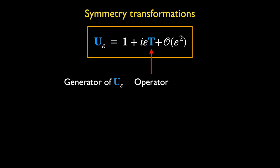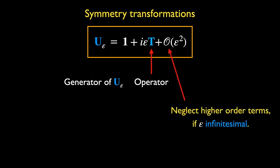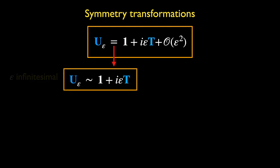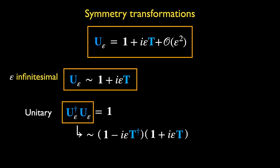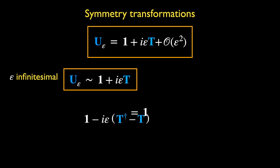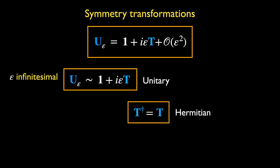The remaining terms in this series are higher orders in epsilon, and we can neglect these when epsilon is infinitesimal. This is known as an infinitesimal transformation. In this form we can isolate the operator T and examine its properties. Let's see how the unitary condition constrains T. Substituting the infinitesimal form of U into the unitarity condition and dropping higher orders of epsilon, we discover that T must be a Hermitian operator.